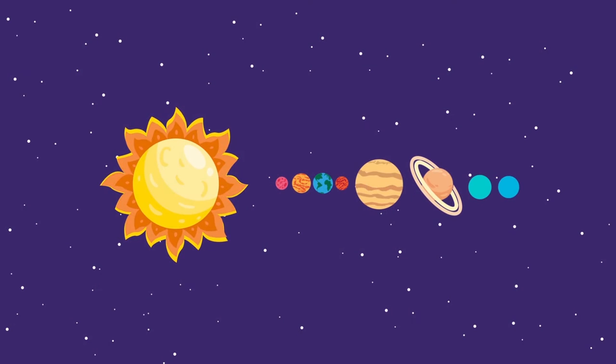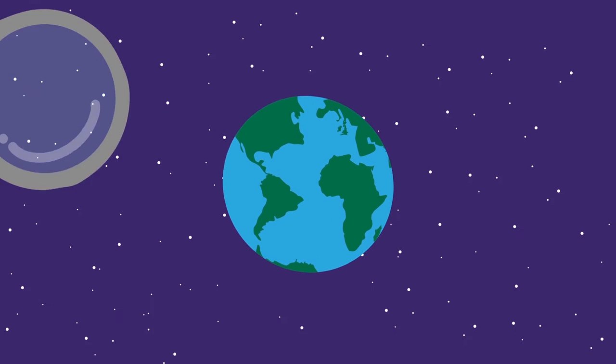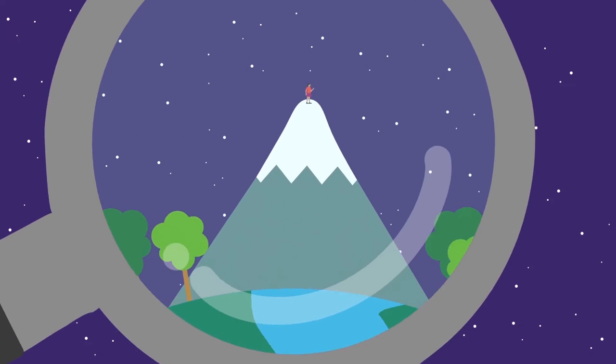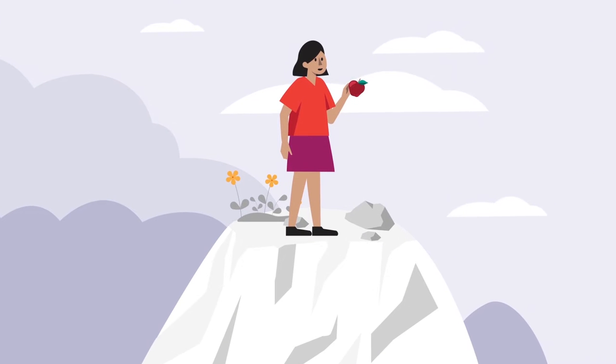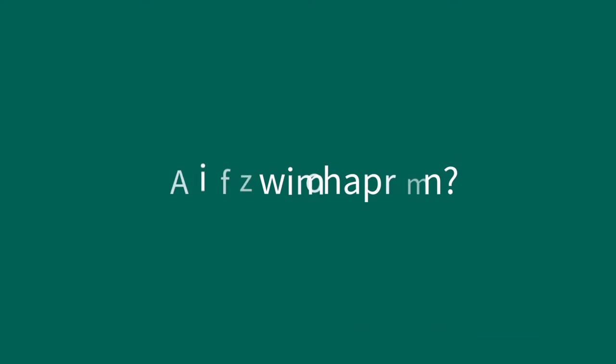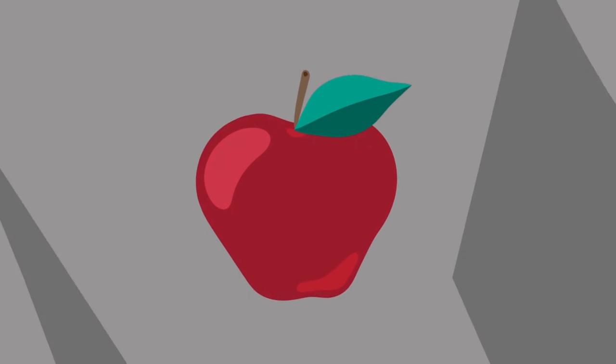To understand this phenomenon, let us zoom into a mountain cliff on the planet Earth. From the mountain, we release an apple. What will happen? It will fall immediately, right?